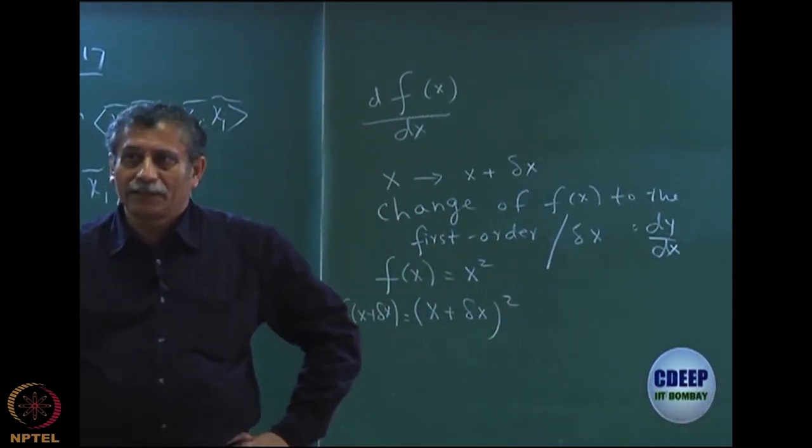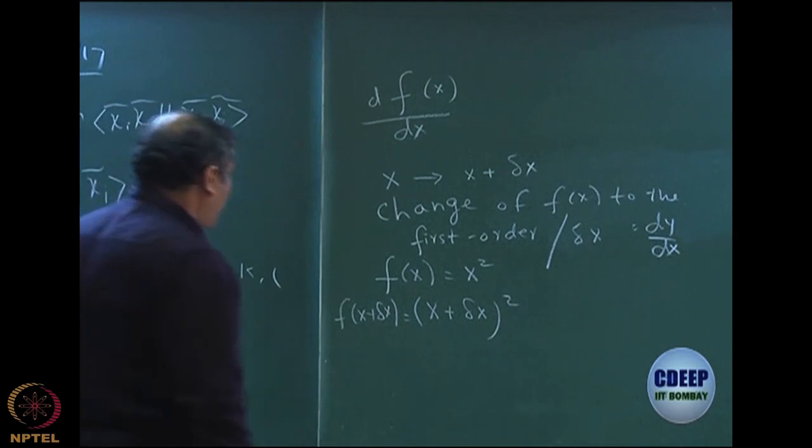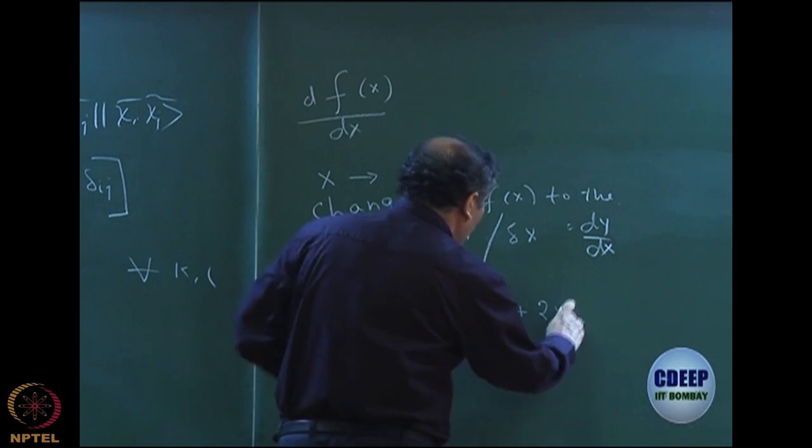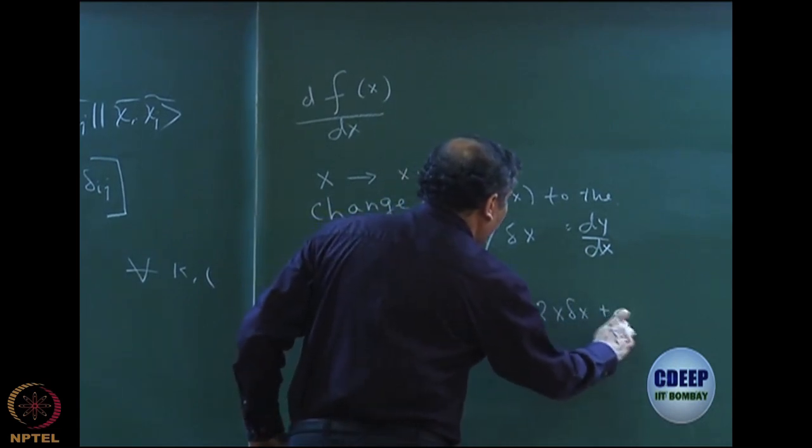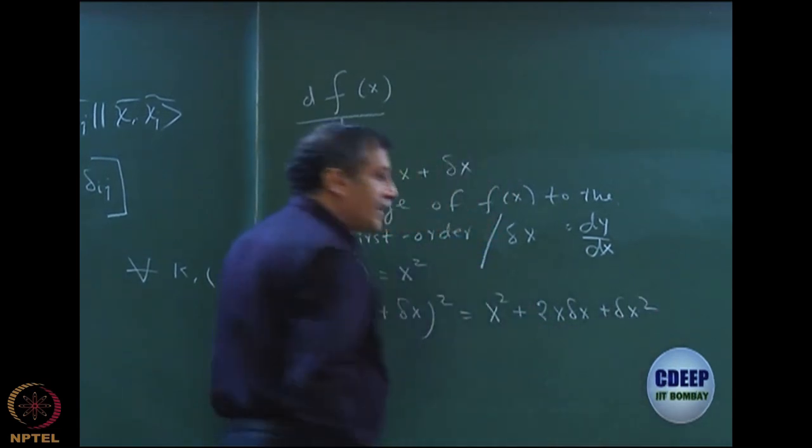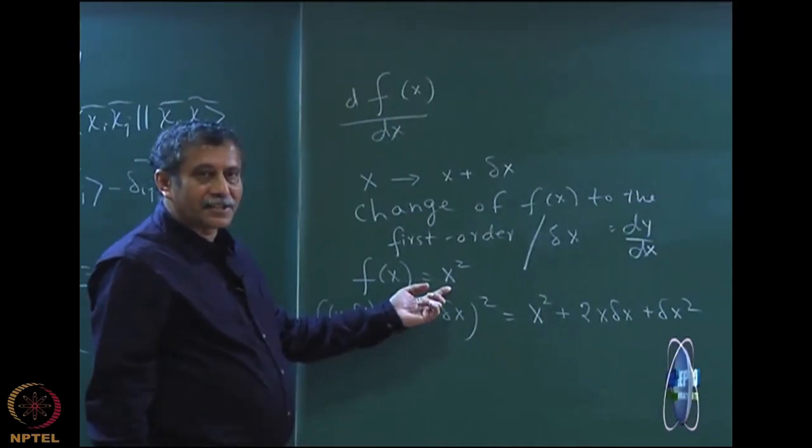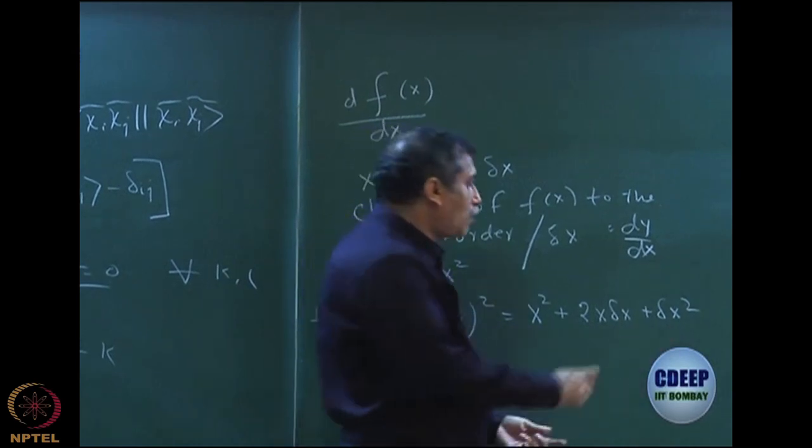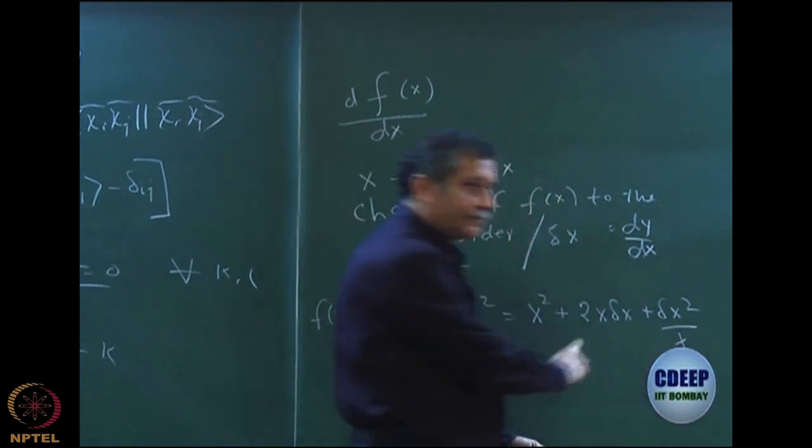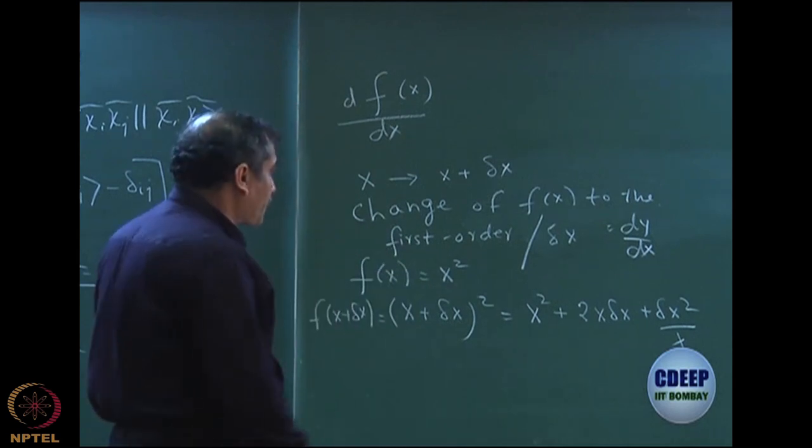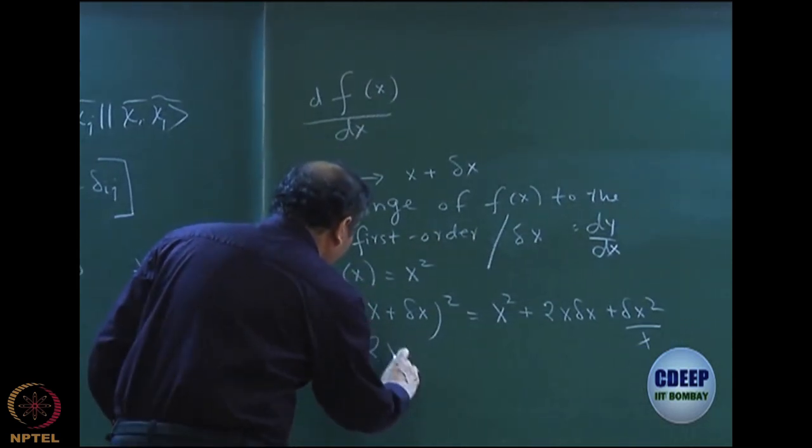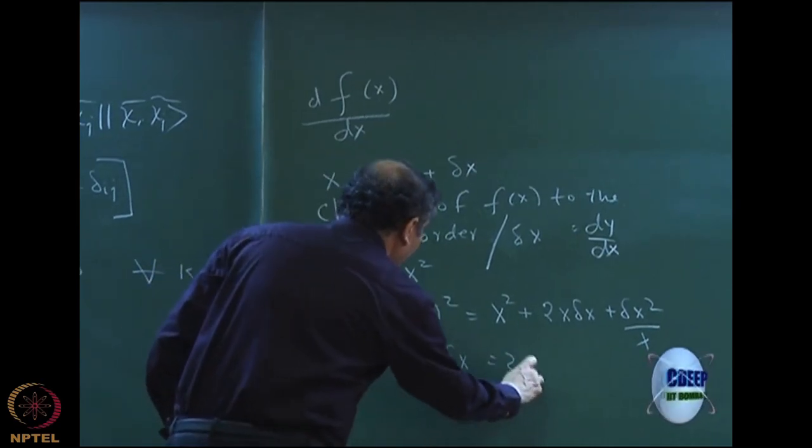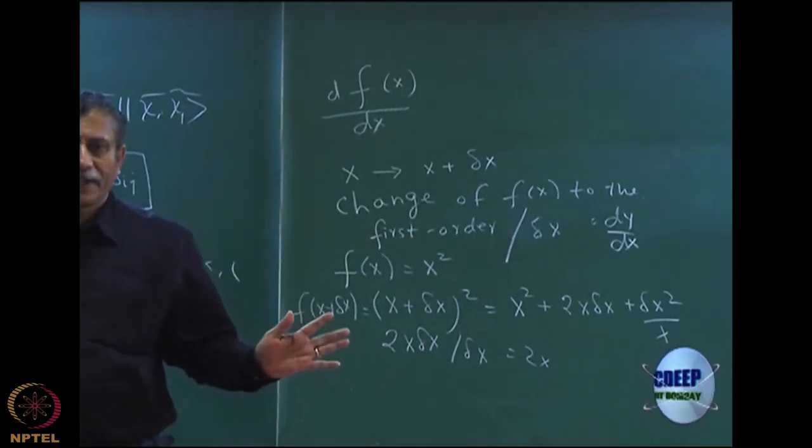However, this function has first order x square. This is of course, no order, 2x delta x plus delta x square. What is the change in this function? The function was originally x square. The change is 2x delta x plus delta x square. Out of this, this is second order. I will not consider this. My first order change is only 2x delta x. Now, divide by delta x, you get 2x. That is something that you already know. For every derivative, you can always find the derivative in this manner.